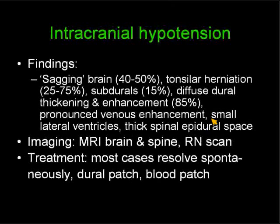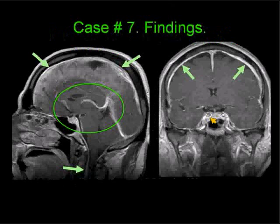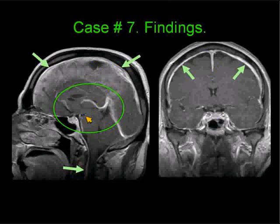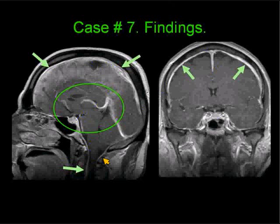Most of these patients will have symptoms that resolve spontaneously. The findings in this case include pronounced venous enhancement, slumping of the brain with lack of clear visualization of the third ventricle, obliteration of the suprasellar cistern, flattening of the ventral aspect of the pons, and the fourth ventricle is not well seen. There is no significant herniation of the cerebellar tonsils, but we see thick enhancing dura and enhancement of the epidural space within the spinal canal — all findings typical for intracranial hypotension.